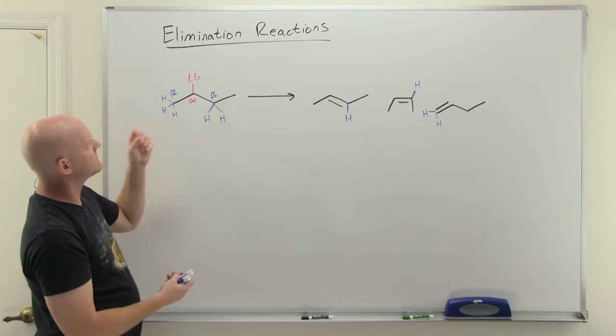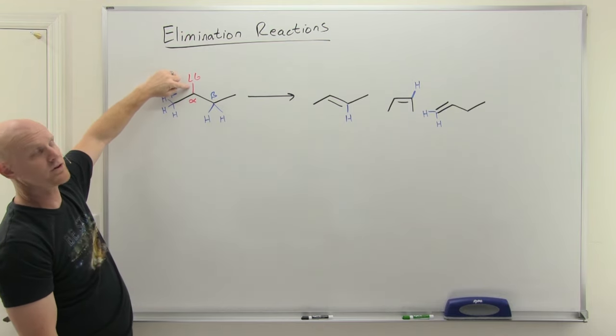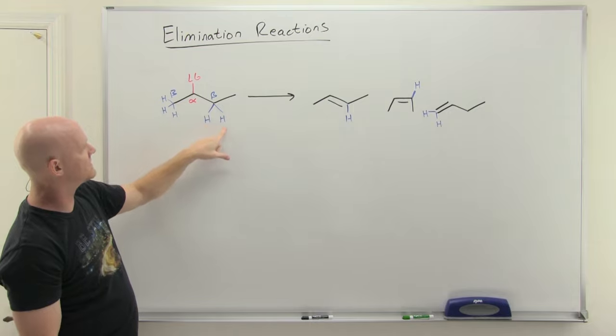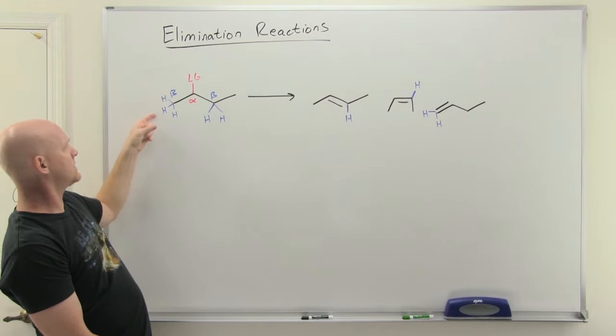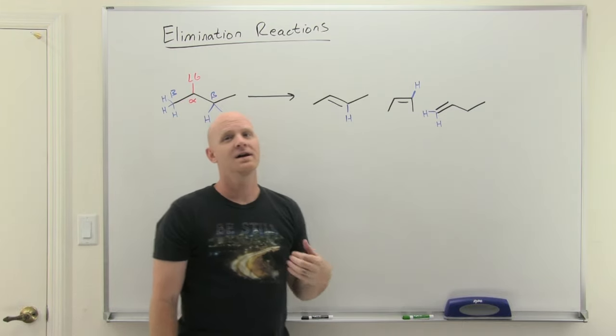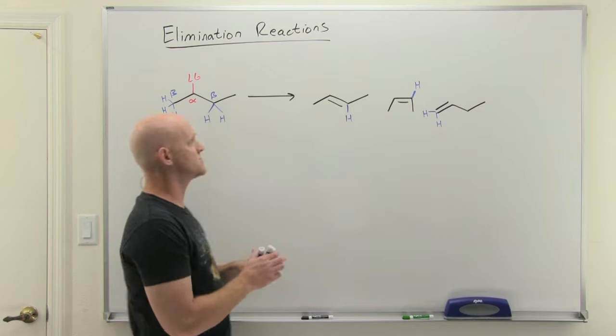In this case elimination, we're going to lose two sigma bonds and make one new pi bond. We're definitely always going to lose the leaving group. Then maybe we lose one of these two hydrogens to make one of these two products, or maybe we lose one of these three hydrogens to make the product on the far right. What determines which we form as the major product is what's called Zaitsev's rule.